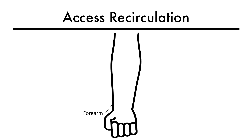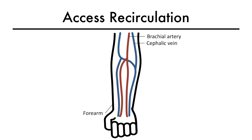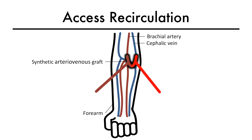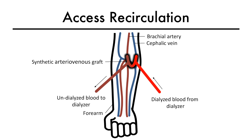Let's demonstrate access recirculation. This is a cartoon of a patient's arm with the brachial artery and cephalic vein and a synthetic arteriovenous graft connecting the two. Undialyzed blood leaves via the arterial needle and dialyzed blood returns via the venous needle and enters the systemic circulation.